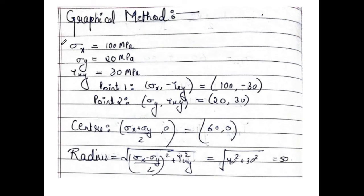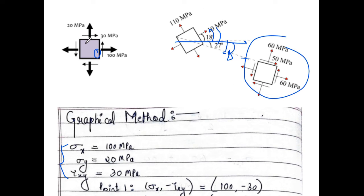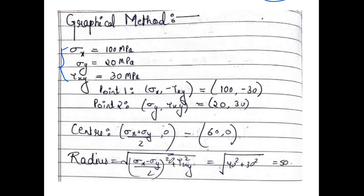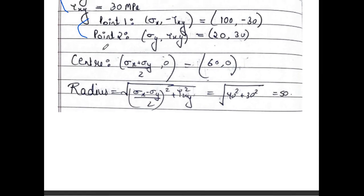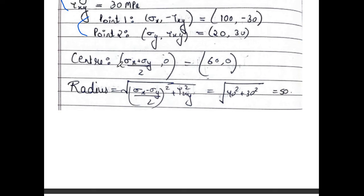Now coming to the graphical method — Mohr's circle. To construct the circle, we take two points: Point 1 is (σx, −τxy) = (100, −30) and Point 2 is (σy, τxy) = (20, 30). The line joining these two points is the diameter of the Mohr's circle. The center of the circle is found as the midpoint: (σx + σy)/2 = 60, giving center at (60, 0).